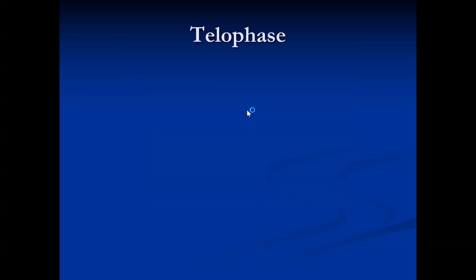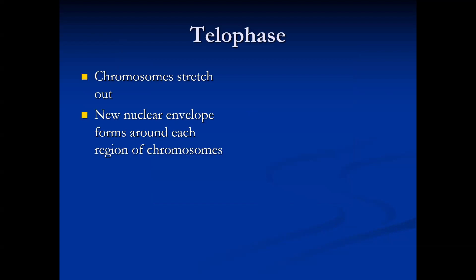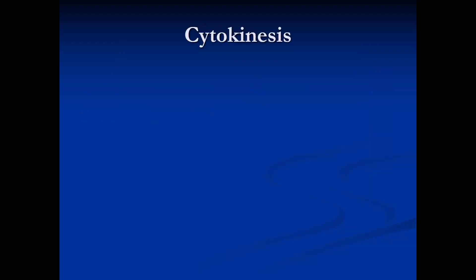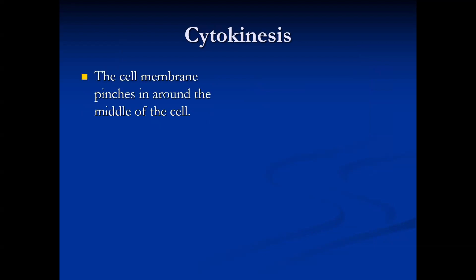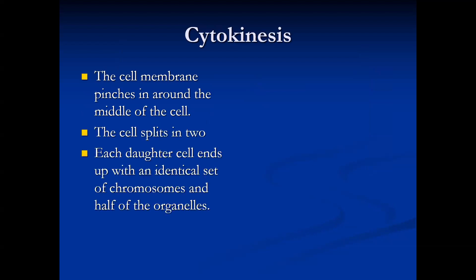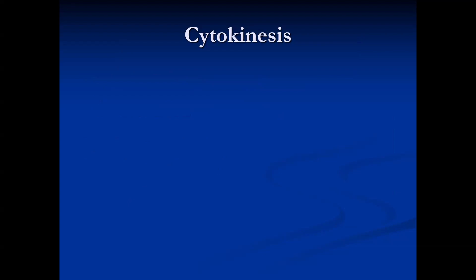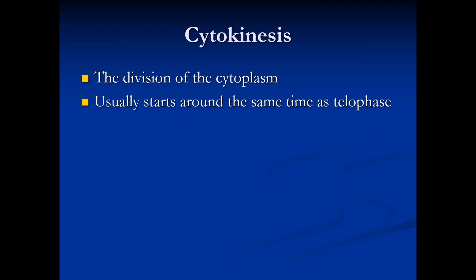During telophase, the chromosomes stretch out and a new nuclear envelope forms around each group of chromosomes at opposite ends of the cell. This results in two nuclei. Then cytokinesis begins — the division of the cytoplasm — which usually starts around the same time as telophase, resulting in two identical cells.